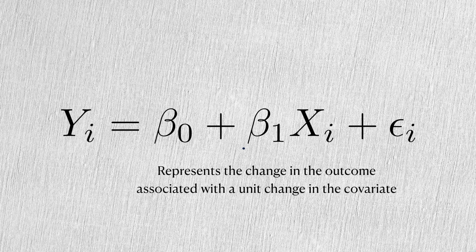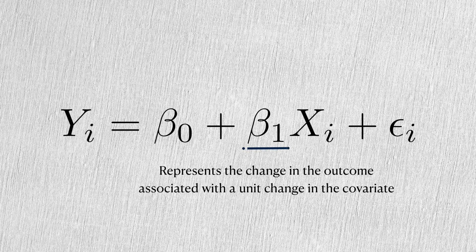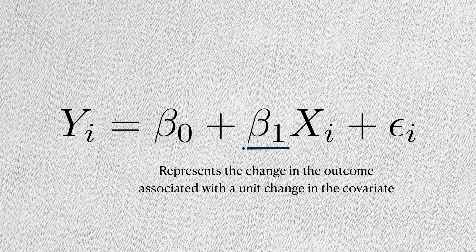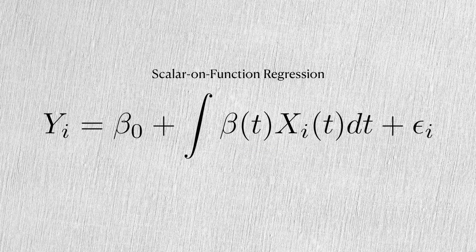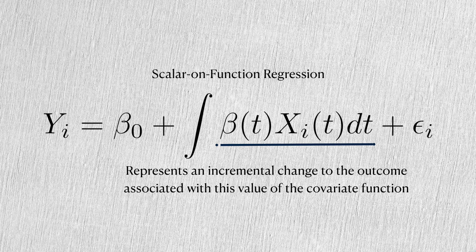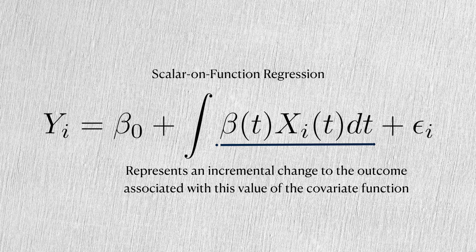In linear regression, the coefficient represents the change in the outcome for a unit change in the covariate. In scalar-on-function regression, we're interested in estimating a coefficient function instead. For a given t, this product indicates a small contribution to the change in the outcome.